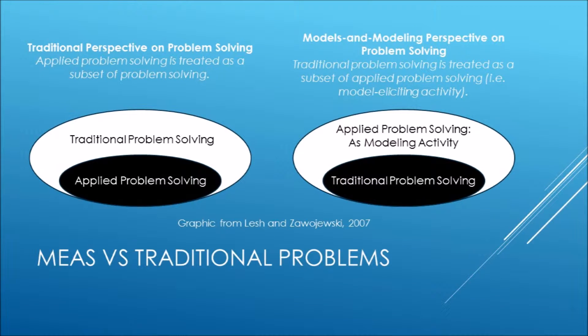In this graphic on the left, you see a typical textbook traditional approach where applied problem solving is within traditional problem solving — you might have some applied problems at the end of the unit. Whereas on the right, in the models and modeling perspective, traditional problem solving is a subset of applied problem solving. The unit is introduced with an applied problem, the students mathematize the situation, and then use their mathematization to solve traditional problems.